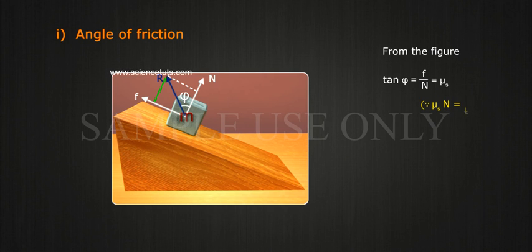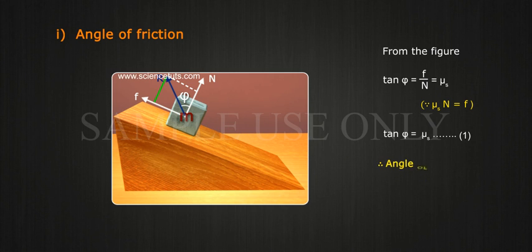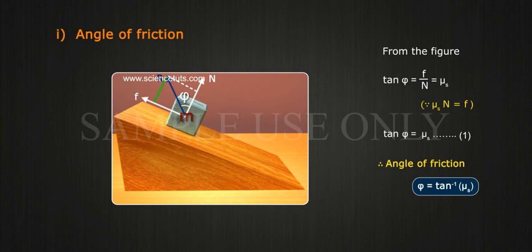Since mu S times N is equal to F, then tan phi is equal to mu S. (Equation 1) Therefore, the angle of friction phi is equal to tan inverse of mu S.